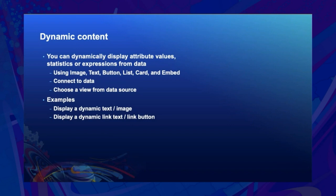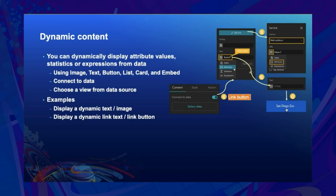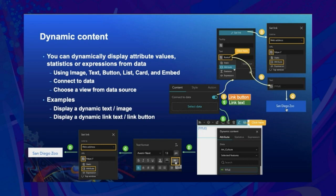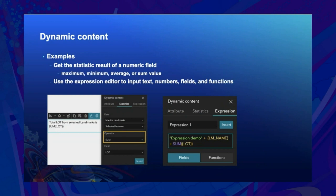Another important aspect of Data Source is dynamic content. You can dynamically display attribute values, statistics, or expressions from a feature layer using text, button, image, and more. For example, if a feature layer contains URLs to websites, you can use a button as a link to open the website associated with a selected feature. The expression editor allows you to combine text, numbers, field variables, and statistics together.